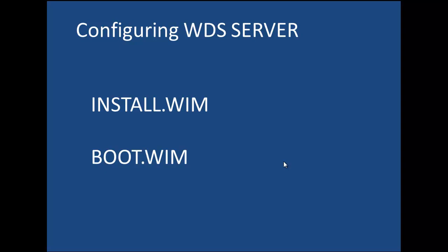If you wanted to deploy a 32-bit system, then you would have to use the 32-bit install.wim file. And if you wanted to deploy a 64-bit system, you would have to use a 64-bit install.wim file. With the boot.wim file, you must use a 64-bit boot.wim if you need to deploy a 64-bit install.wim. However, you can use a 32-bit boot.wim to deploy both 32-bit and 64-bit install.wim.